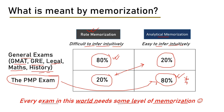On the other side of the spectrum: the five process groups of a project — initiation, planning, execution, monitoring and controlling, and close out — is analytical memorization. There is a very logical relationship: planning comes after initiation, execution after planning, monitoring and controlling after execution starts, and finally close out. Unlike the alphabet, there is clear logic here. This is a typical example of analytical memorization using logic and common sense.